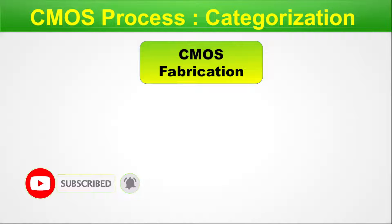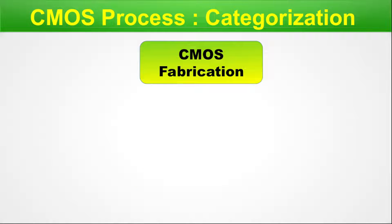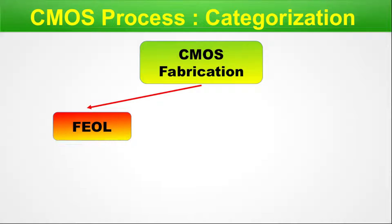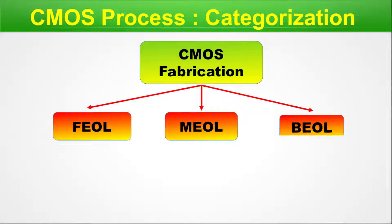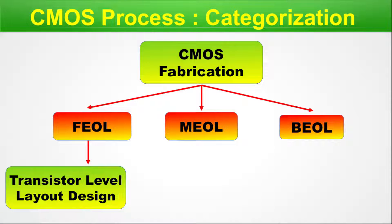Now we will categorize the entire CMOS fabrication into three different sections as per the actual semiconductor fab process divisions. The first part is called the FEOL or front end of line. The next part is called the middle end of line. And the last part is called the back end of line, that is BEOL.